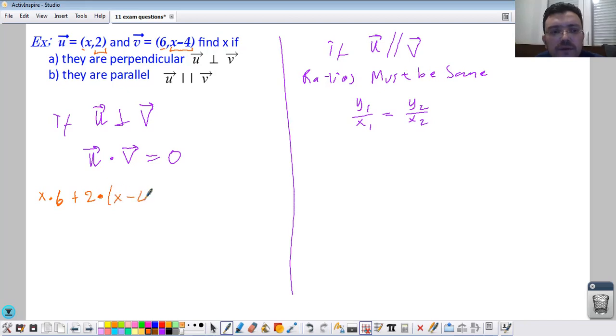The dot product should be equal to zero. There will be 6x plus 2x minus 8, which is 2 times minus 4, equals 0. Move minus 8 over here, and 6 plus 2 is 8x, so x equals 1.